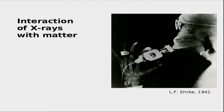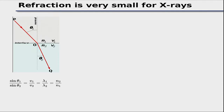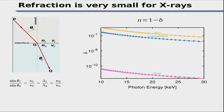Once created, X-rays interact with matter. For visible light we think of Snell's law — waves bending at interfaces with different refractive indices. For X-rays, the refractive index n = 1 − δ, where δ is extremely small (~10⁻⁷) for essentially all materials. So X-rays travel straight; they are absorbed and scattered but not refracted. We have purely geometric optics and don't need lenses — though that's also a limitation, since building an X-ray lens is very hard.